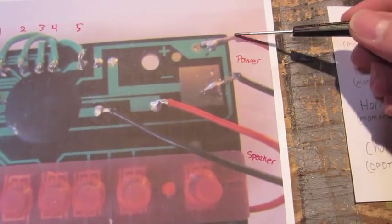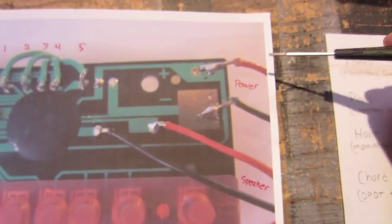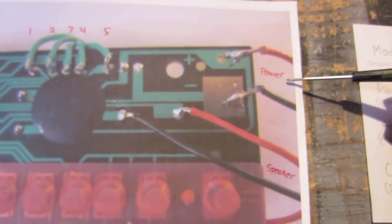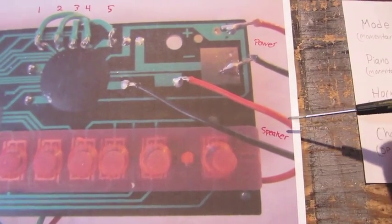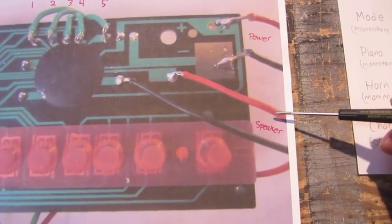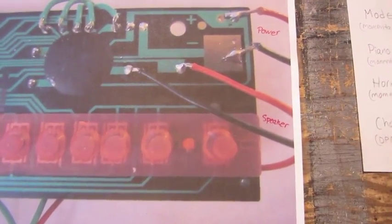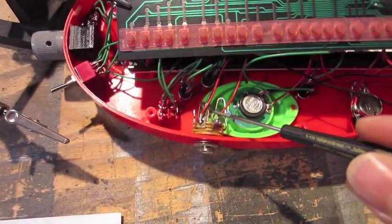Over here we've got the power. This is where you would connect your reset or power switch. And then over here is the speaker. This is where you would connect either the volume pot and then also the quarter inch out.